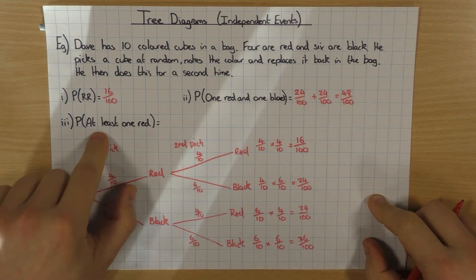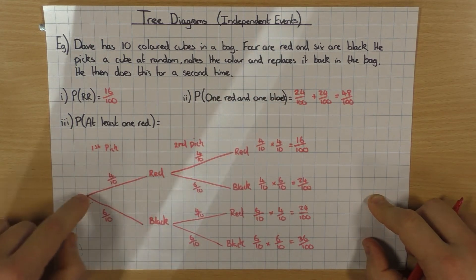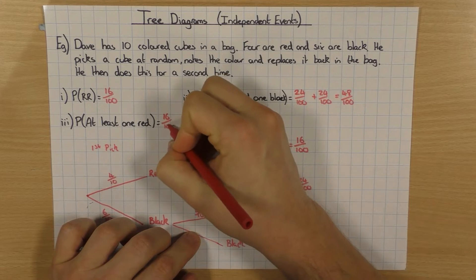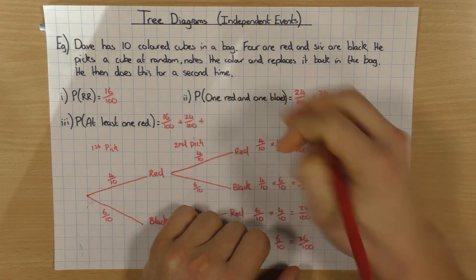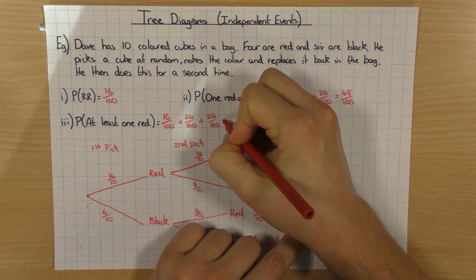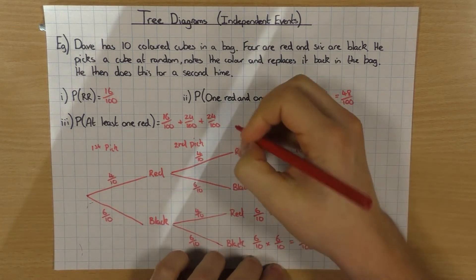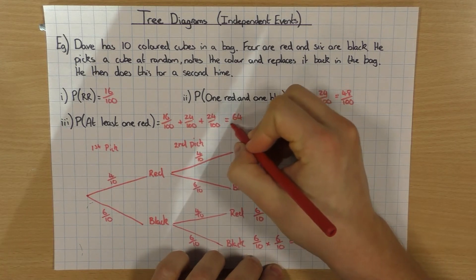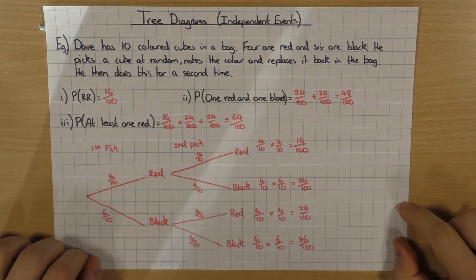For 'at least one red': I could have red-red (sixteen over a hundred), red-black (twenty-four over one hundred), or black-red (twenty-four over one hundred) — at least one of them is red in each case. I can't have black-black because obviously neither is red. So I add those up, which gives thirty-four over one hundred. That's how you answer a question about at least one red.